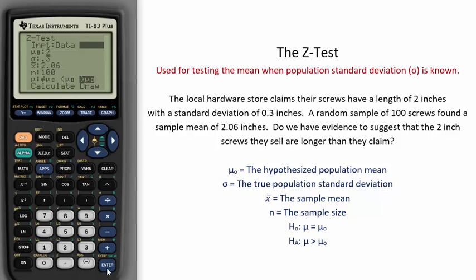The local hardware store claims their screws have a length of 2 inches with a standard deviation of 0.3 inches. In this example, 2 inches is the hypothesized population mean, known as mu naught. 0.3 inches is the true population standard deviation.